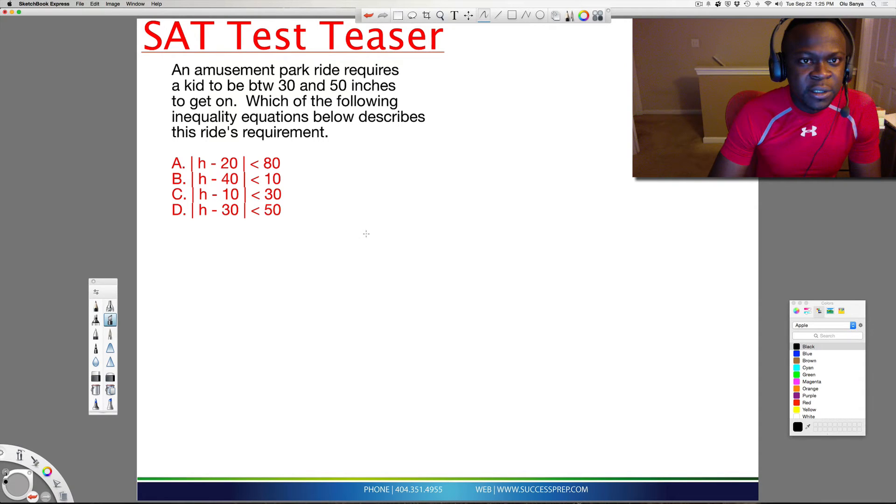Hi there. For a question like this on the SAT, it says an amusement park ride requires a kid to be between 30 and 50 inches to get on. Which of the following inequalities describes the ride's requirement?